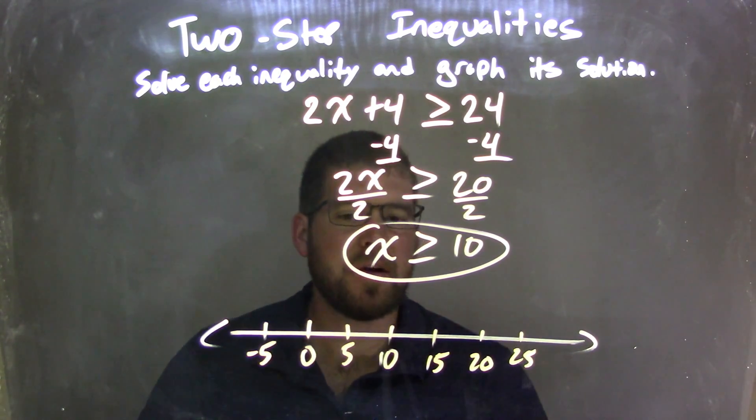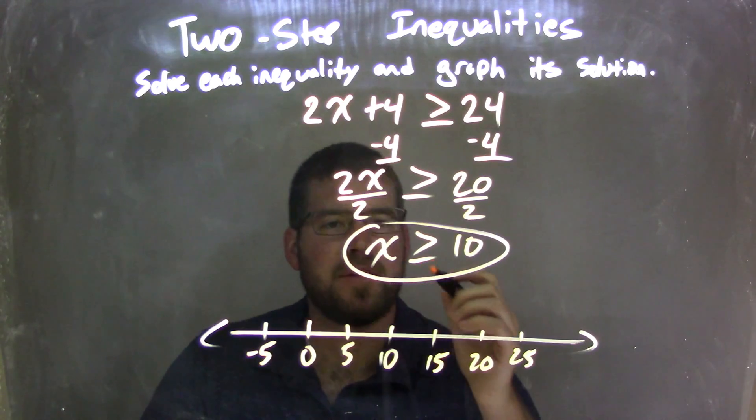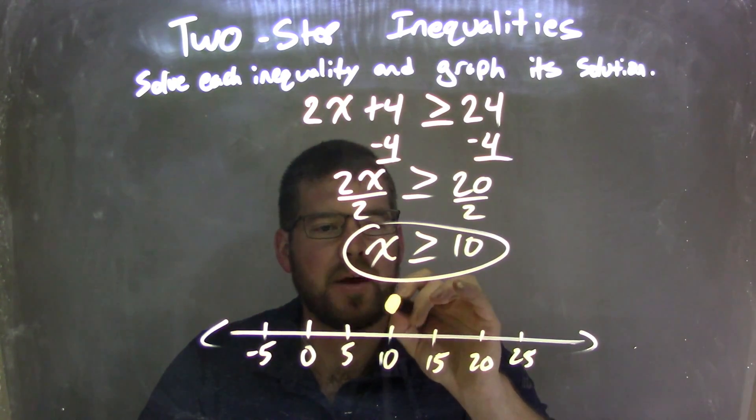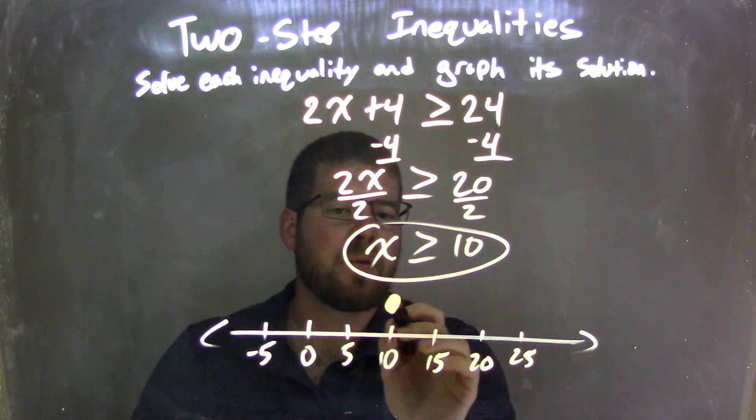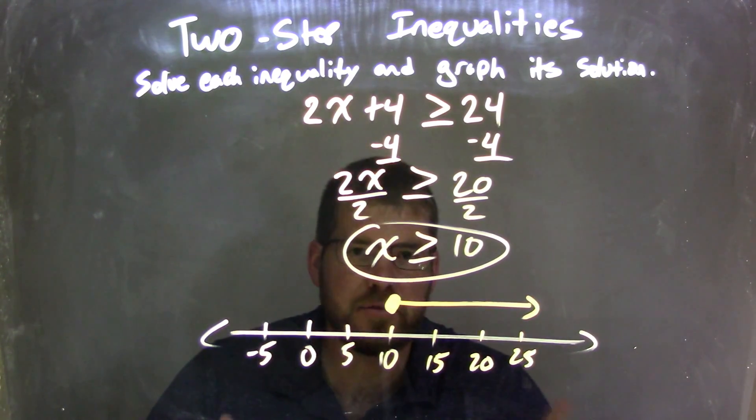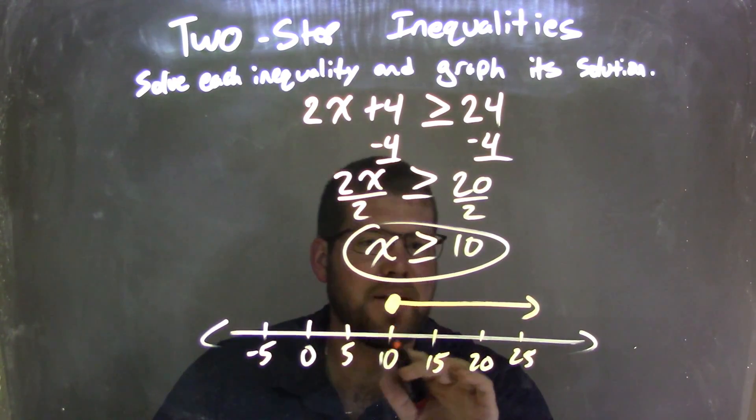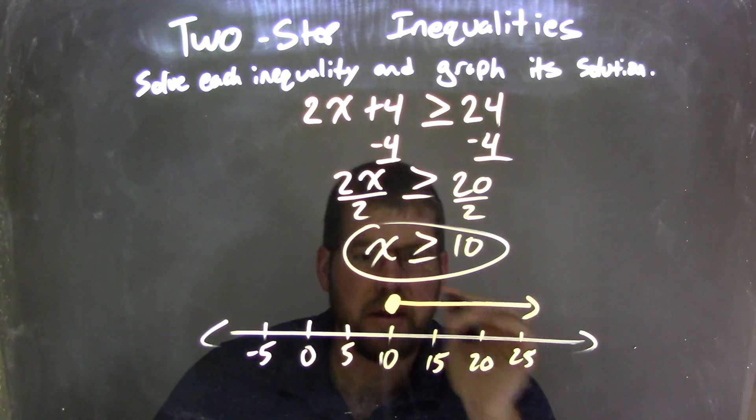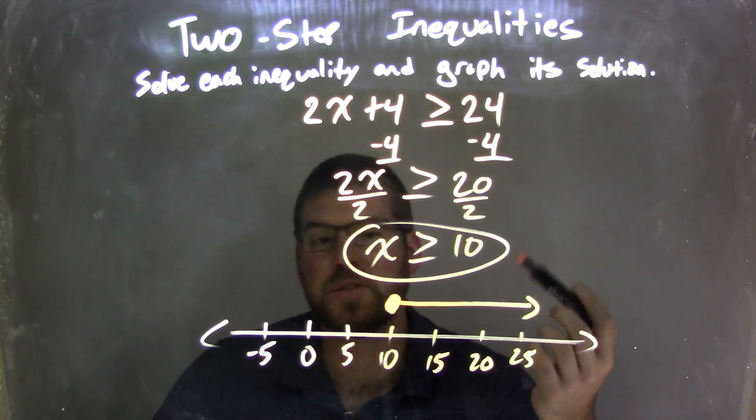So x is greater than or equal to 10. Well, if it's equal to, we have a closed circle right here at 10, and it's greater than, we put our arrow to the right, to the right of it. So x is greater than those values. So now our graph matches our inequality.